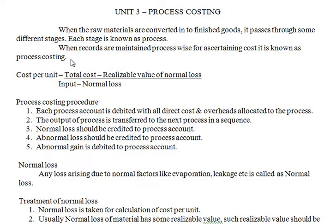In large industries, records of each process are maintained separately, and at the end of the year accounts are prepared process-wise to find out profit or loss of each process. The formula to calculate cost per unit is: total cost minus realizable value of normal loss, divided by input minus normal loss.